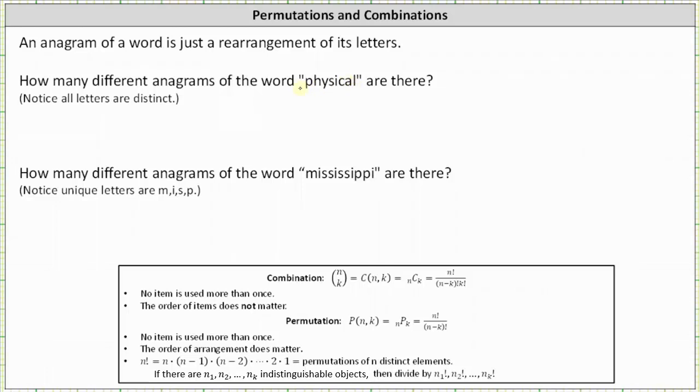Well to begin, notice physical has eight letters, all of which are distinct, meaning all the letters are different. When forming an anagram, because we use each letter once and the order does matter, we can determine the number of anagrams using a permutation.